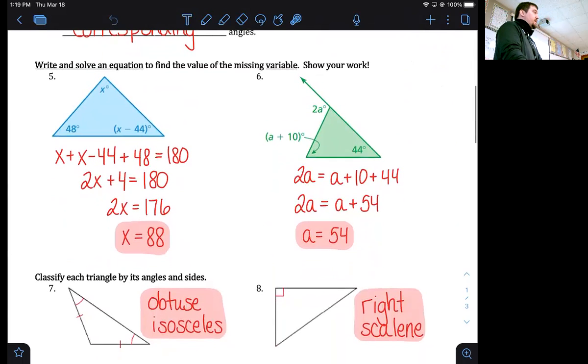Number five, the triangle sum theorem says that these three angles will add to 180 degrees. So x plus x minus 44 plus 48 will equal 180 degrees. That combines to 2x plus 4 equals 180, subtract 4 and then divide by 2, and you should get 88 for x. Just had to solve for x here.